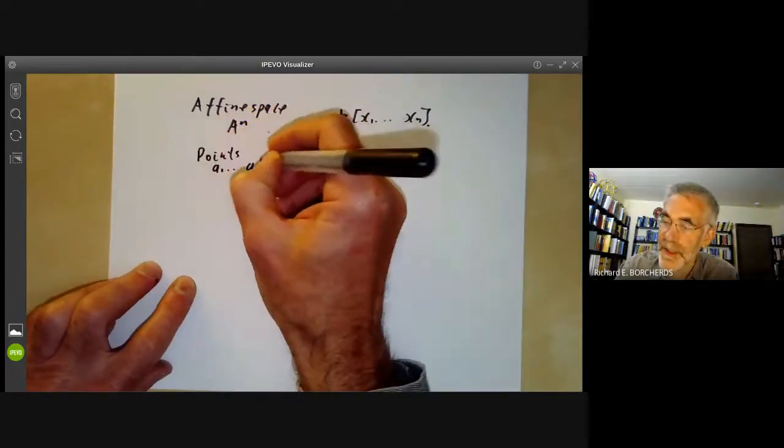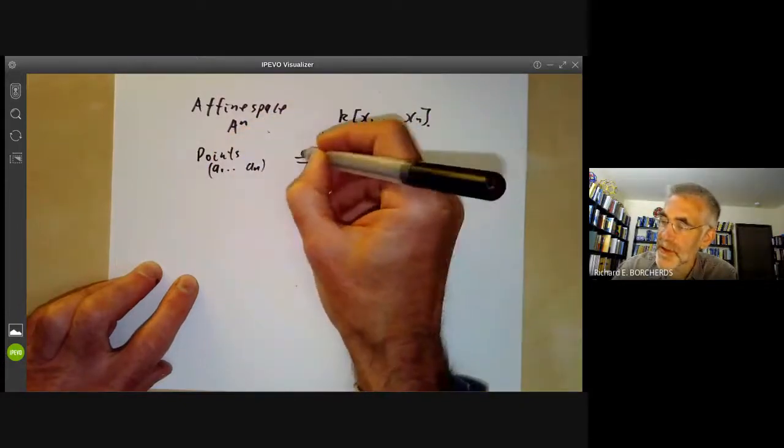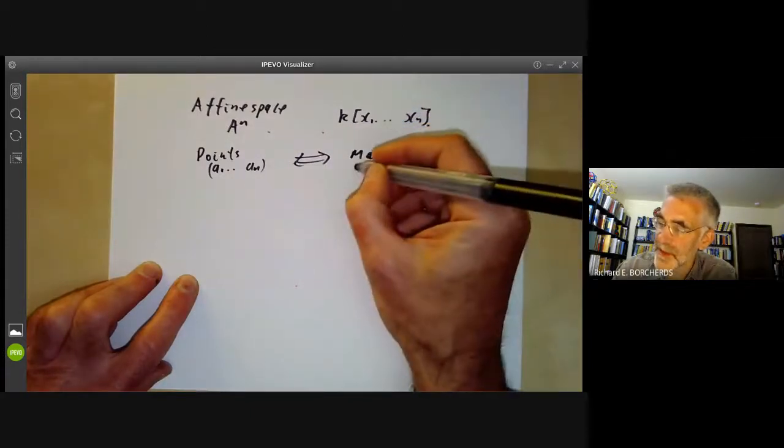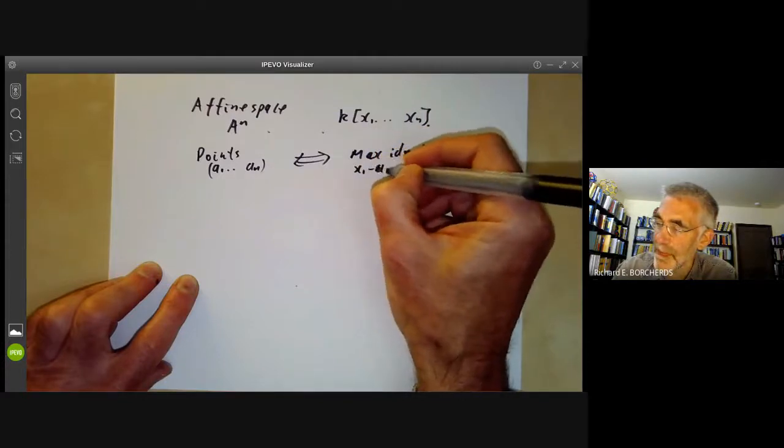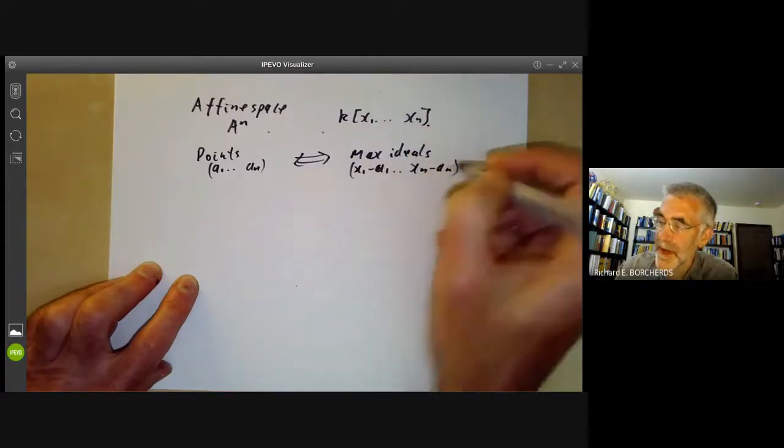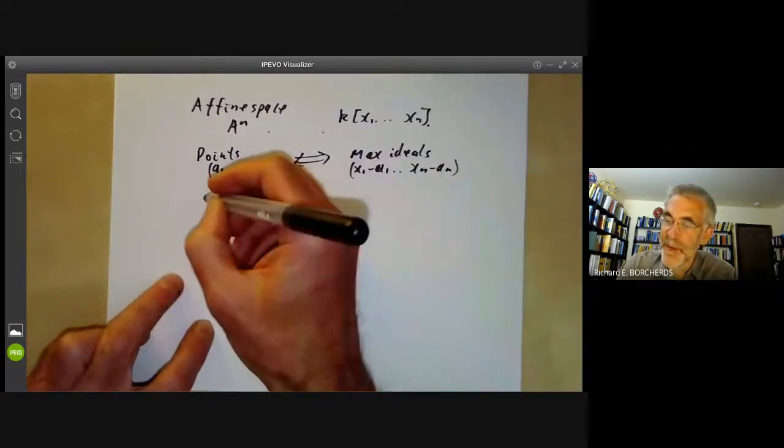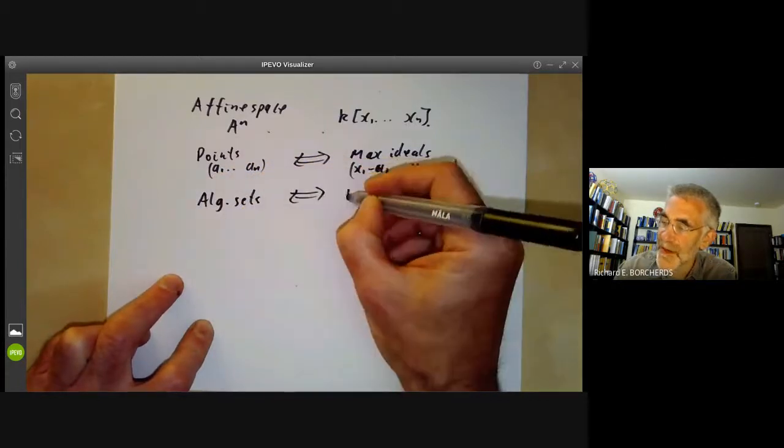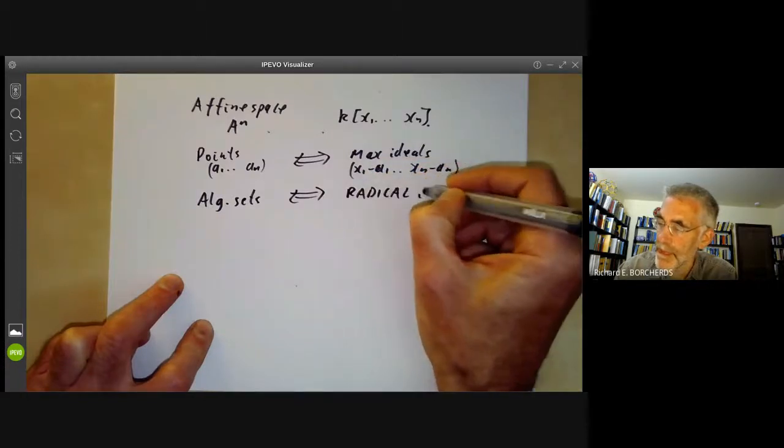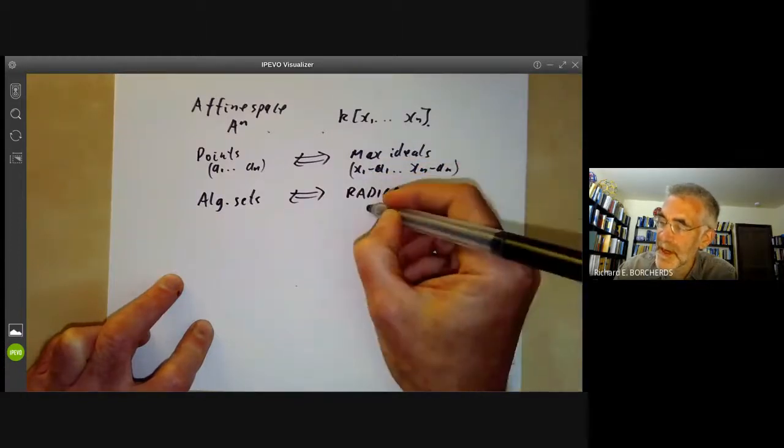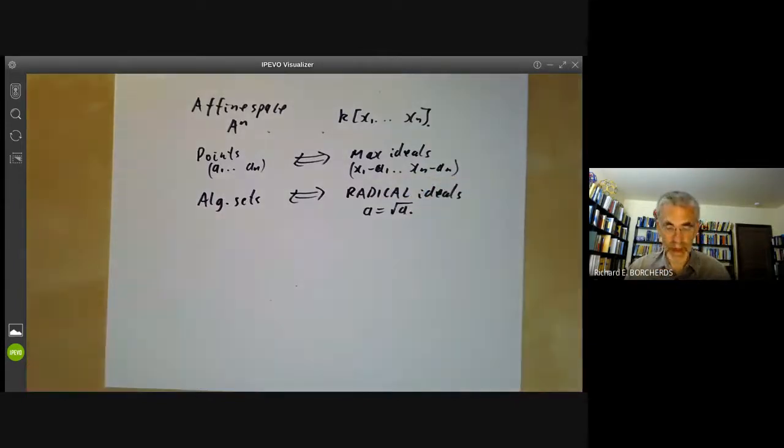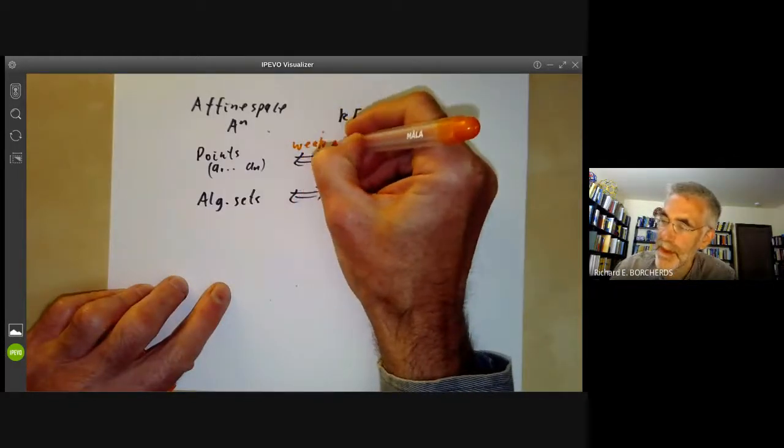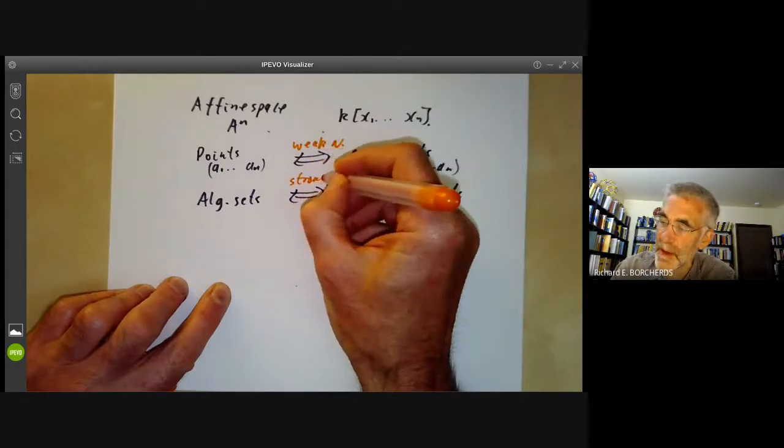Points (a1,...,an) of A^n correspond to maximal ideals. So this is the weak Nullstellensatz. And we say that algebraic sets correspond to radical ideals. These are ideals a that are equal to their own radical. So this correspondence here is the weak Nullstellensatz and this correspondence here is just the strong Nullstellensatz.